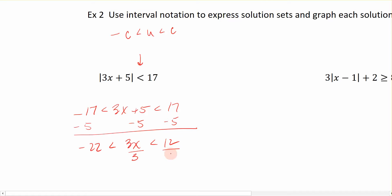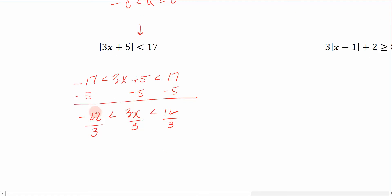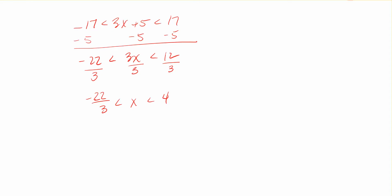So negative 22 over 3, that's not going to reduce any further, is less than x, which is less than 4. And we can write that solution,